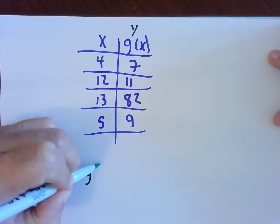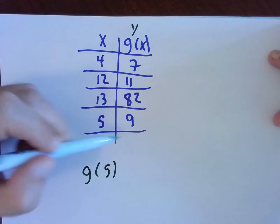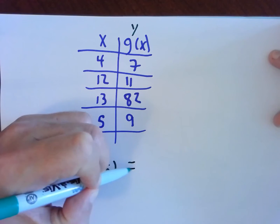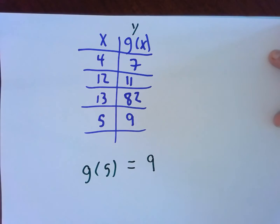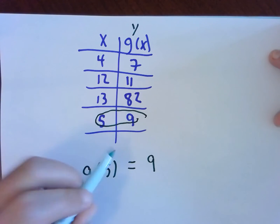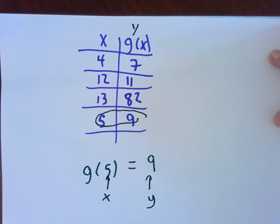And if I asked for, say, g of 5, that just means look in your x, y table. When x is 5, what's the y value that goes with it? And of course, the answer is 9. Right here. g of 5 is 9. The inputs are x's. Inside here are my x's. The answers, the outputs, are y's.